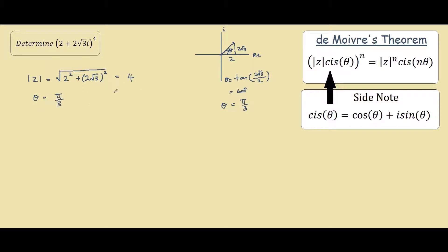So now we have all the information to change into our polar form. Our z equals 4 cis pi on 3, and this is all raised to the power of 4.